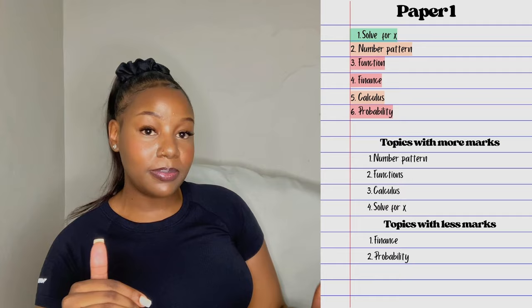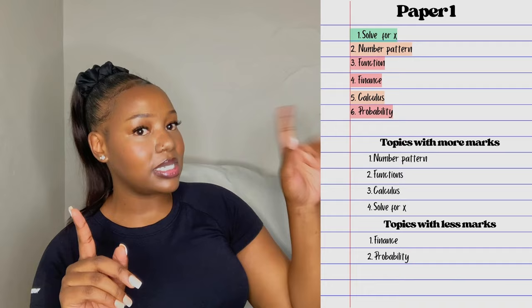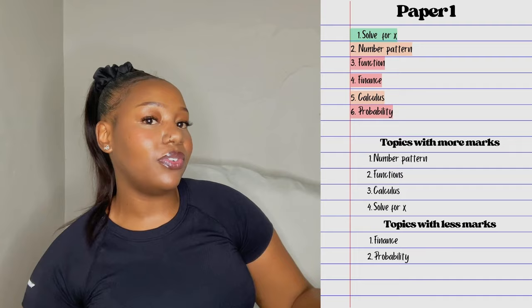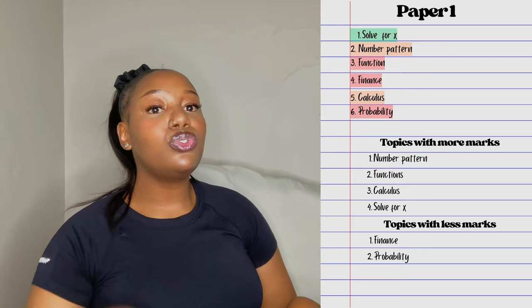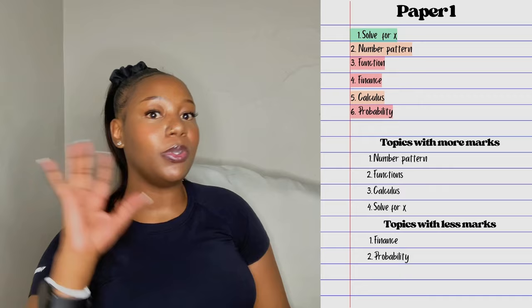Focus on one paper at a time. List all topics for paper one and mark each as green, orange, or red. Then, the topics that are red — start with those. But before you start, make sure the red topics you tackle first are the ones that carry the most marks. Do not focus on topics that don't give you many marks — our goal is to acquire as many marks as possible. We're just collecting marks.